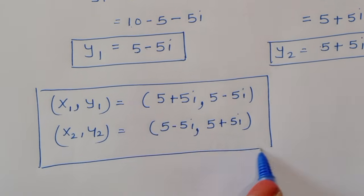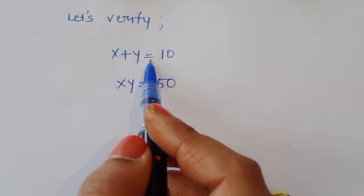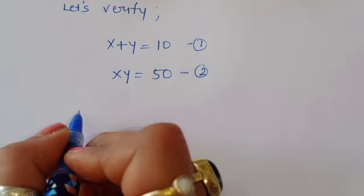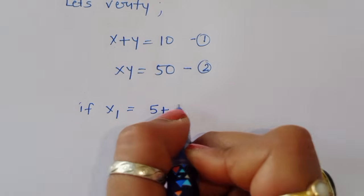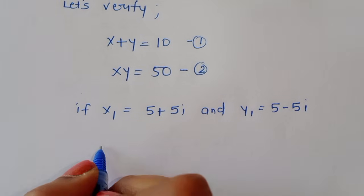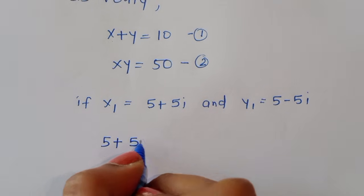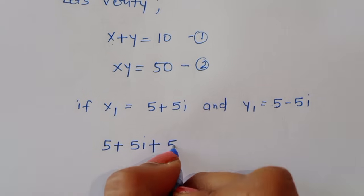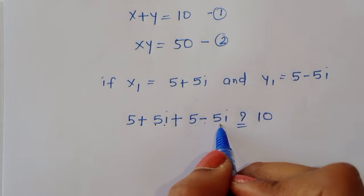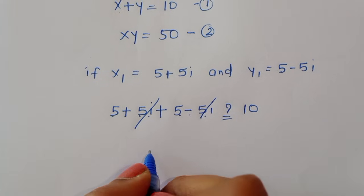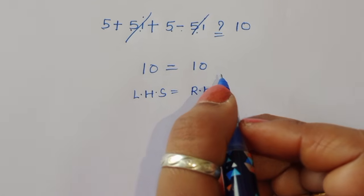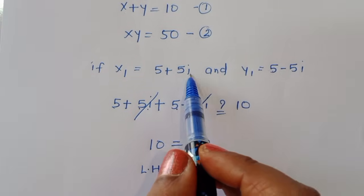Let's verify. Taking x1 = 5 plus 5i and y1 = 5 minus 5i in equation 1: x plus y equals (5 plus 5i) plus (5 minus 5i). The 5i and minus 5i cancel, giving 5 plus 5, which is 10. So LHS equals RHS, confirming equation 1 is satisfied.